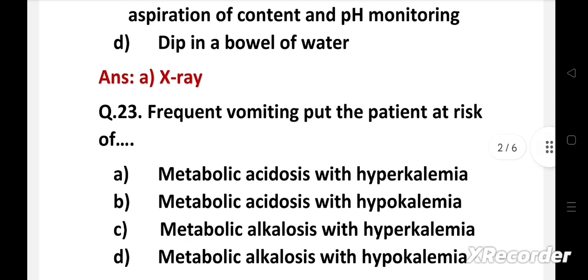Question 23: Frequent vomiting puts the patient at risk of - option A: metabolic acidosis with hyperkalemia, B: metabolic acidosis with hypokalemia, C: metabolic alkalosis with hyperkalemia, D: metabolic alkalosis with hypokalemia.